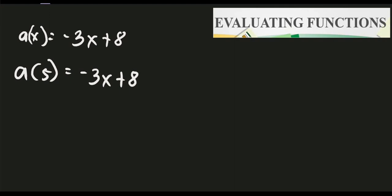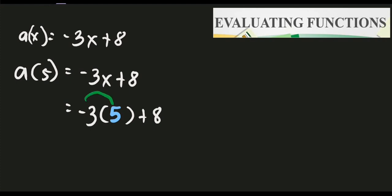Since we're evaluating, just replace the value of x. It gives us negative 3, then change x to 5 — our input — and copy the remaining term, plus 8. Simplify: negative 3 times 5 is negative 15 plus 8. Therefore, a of 5 equals negative 7.